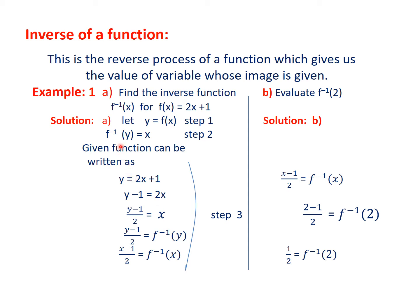Since x equals f⁻¹(y), we replace x with f⁻¹(y) to get f⁻¹(y) = (y − 1)/2. Since the original variable was x, we can replace y with x without any objection, giving f⁻¹(x) = (x − 1)/2. To evaluate f⁻¹(2), we substitute 2 for x in the inverse function. Simplifying, we get f⁻¹(2) = 1/2.